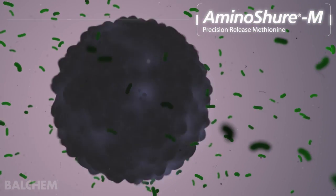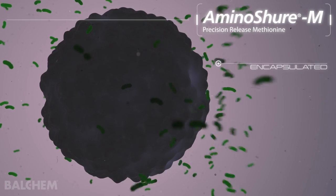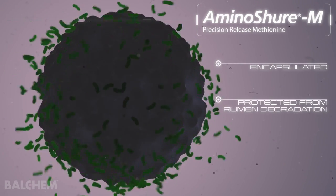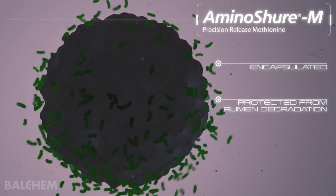Aminosure M is methionine that has been encapsulated to protect it from rumen degradation so that it can be absorbed post-ruminally by the cow.